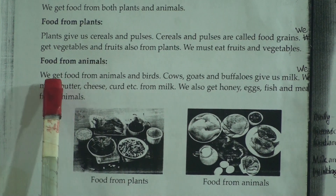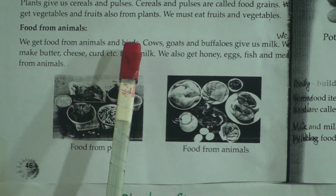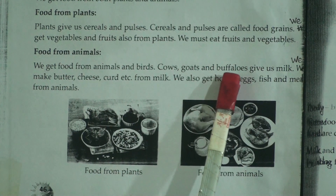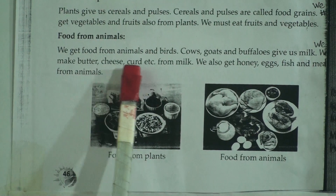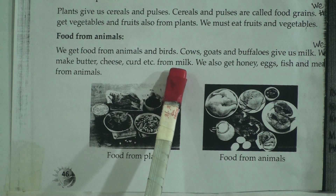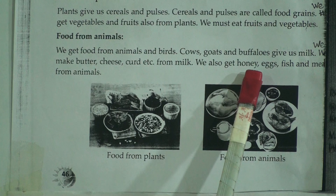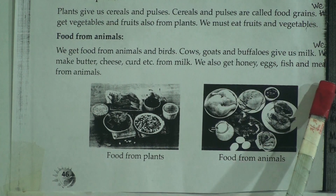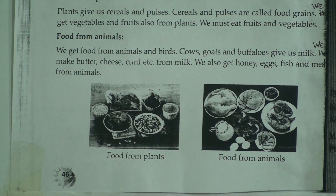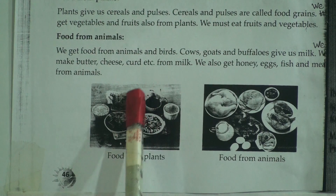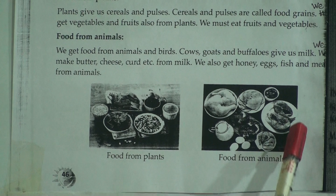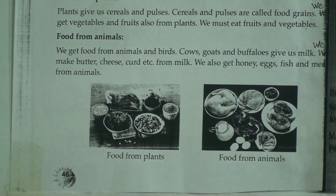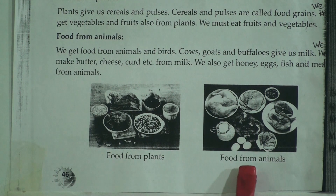Food from animals — we get food from animals and birds. Cows, goats, and buffaloes give us milk. We make butter, cheese, curd, etc. from milk. We also get honey, eggs, fish, and meat from animals. We get honey from honeybees. There are pictures of some foods we get from animals — milk, egg, fish, chicken, meat, and grains.